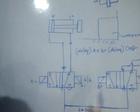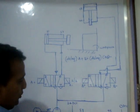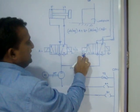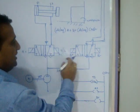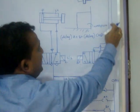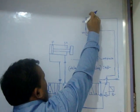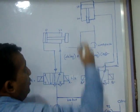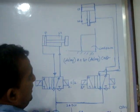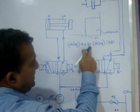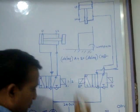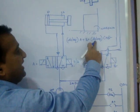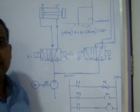The first cylinder signals the second: 'I have reached S2 and am holding the workpiece firmly — now you start.' When S2 is reached, B+ turns on. The valve position changes, pressurized air pushes the second piston downward, and it travels to S4. When B+ is complete, the piston is at S4.